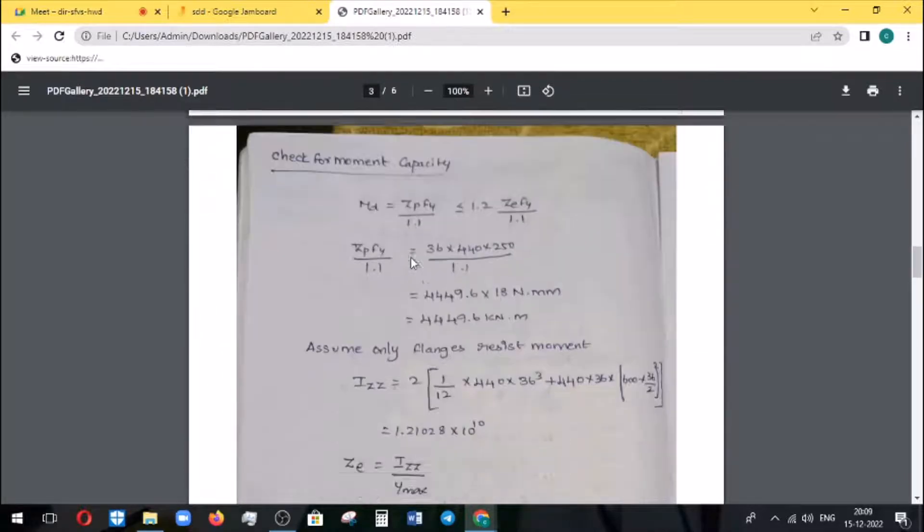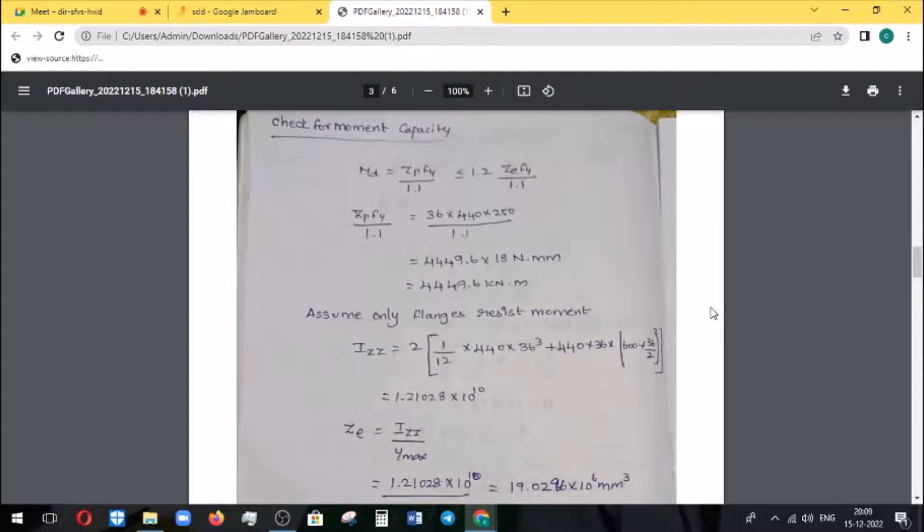Now we have to check the moment capacity. Moment Md equal to Zp Fy by 1.1. This is 1.2 Zp Fy by 1.1. These are the previous values that are repetition. We substitute for moment Md. Then assume only flanges resist moment. If you have intermediate stiffness, then the web resists moment. If you have end bearing stiffness, then the flanges should be considered as only carrying the moment. That's why we find out the Z.